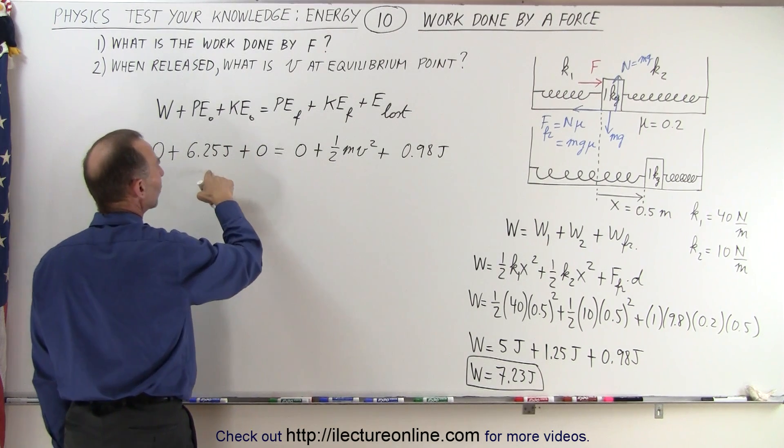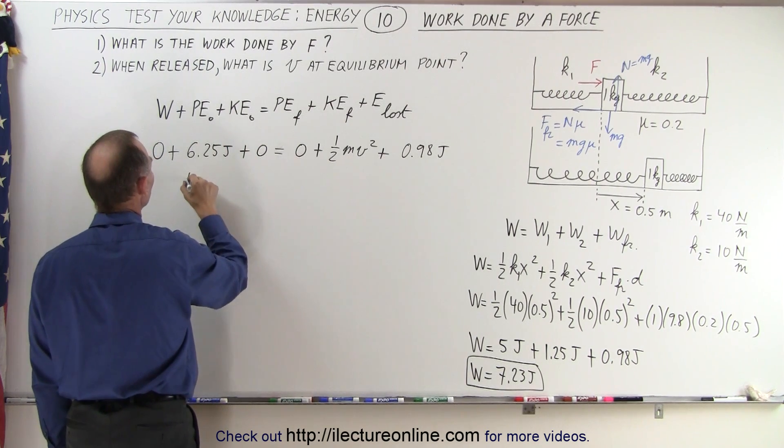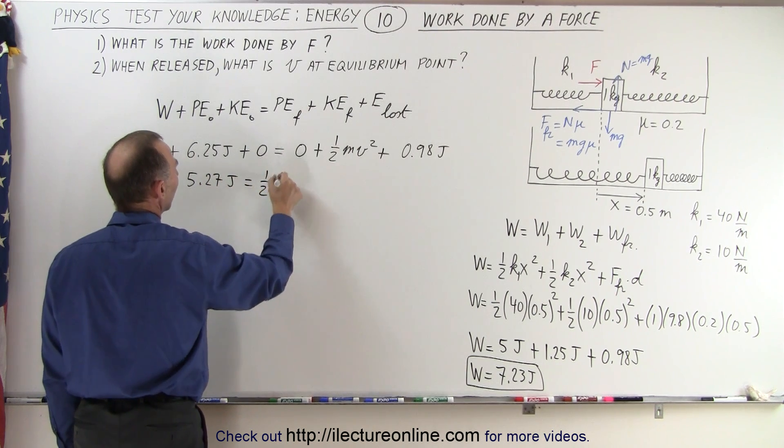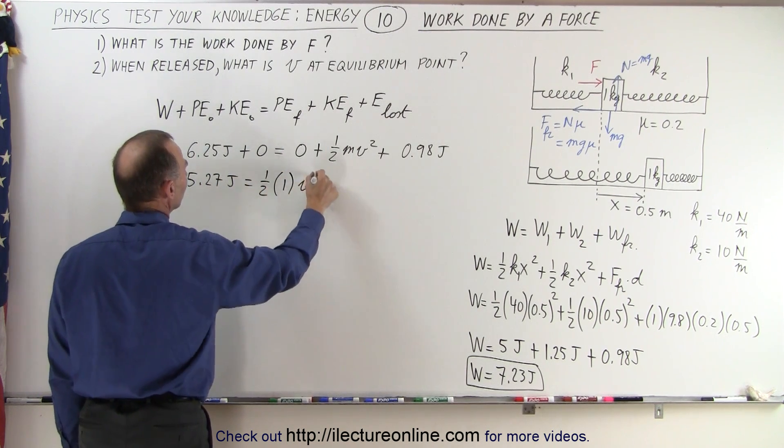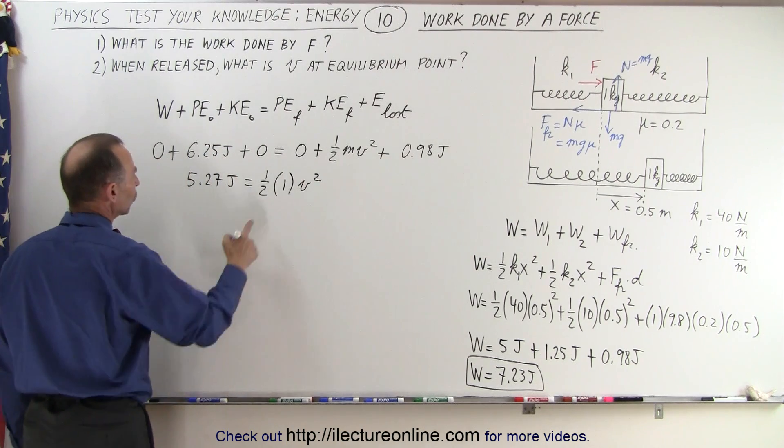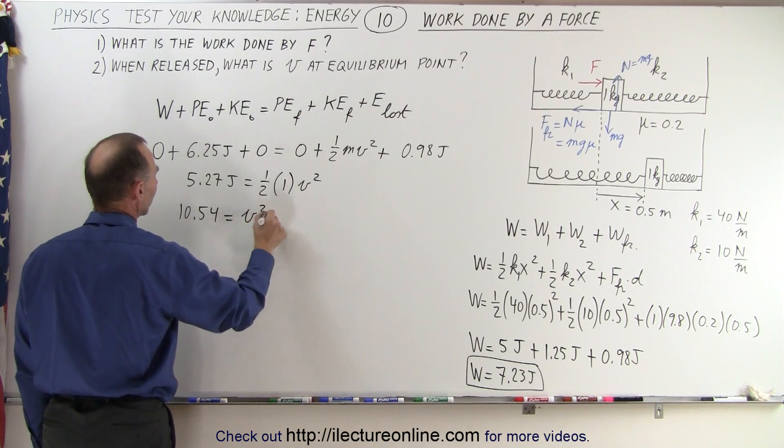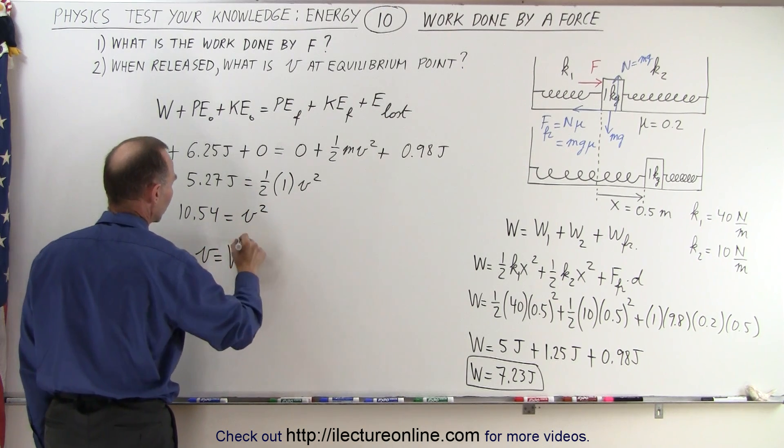Moving that to the other side, we subtract that, so that would be 5.27 joules is equal to one half m which is 1 times v squared.